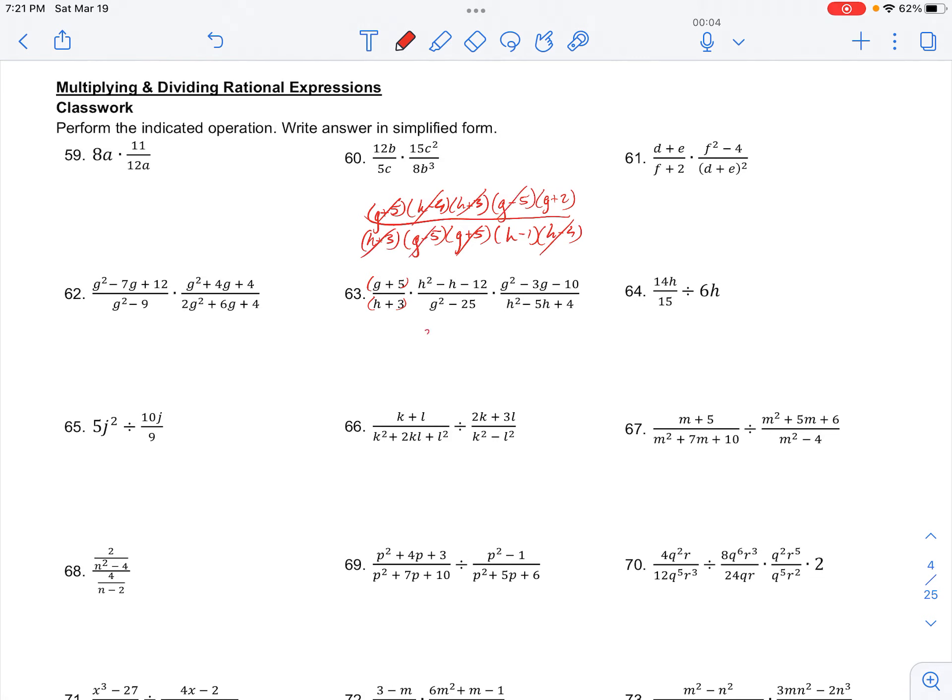So we're left with (g + 2)/(h - 1) as our simplified form.